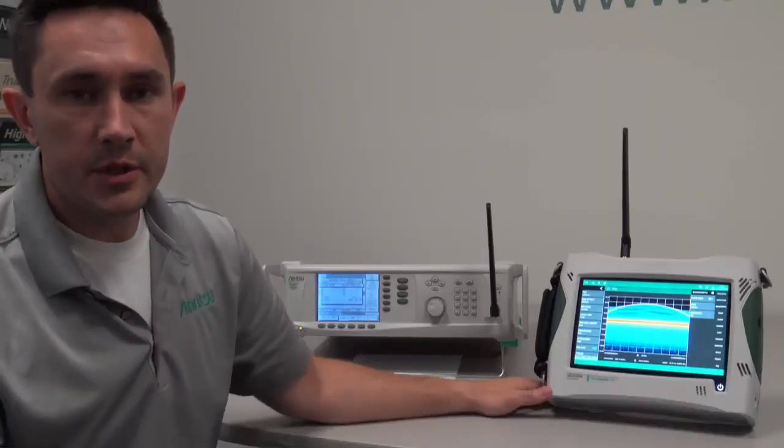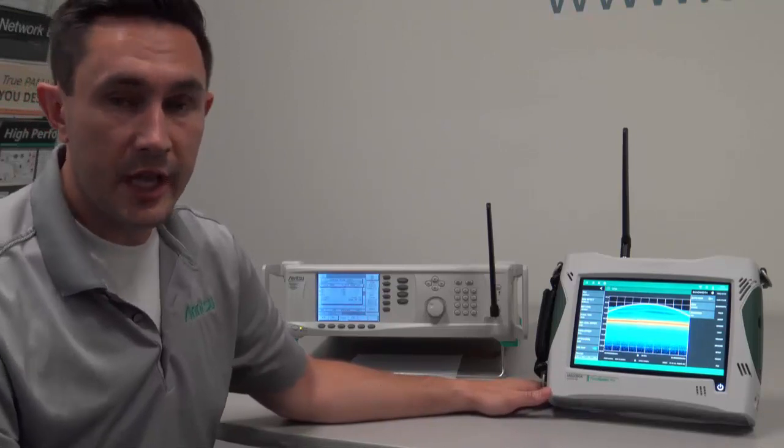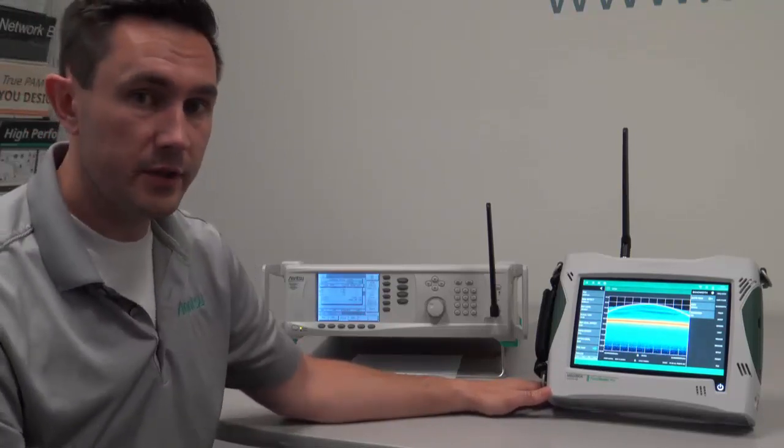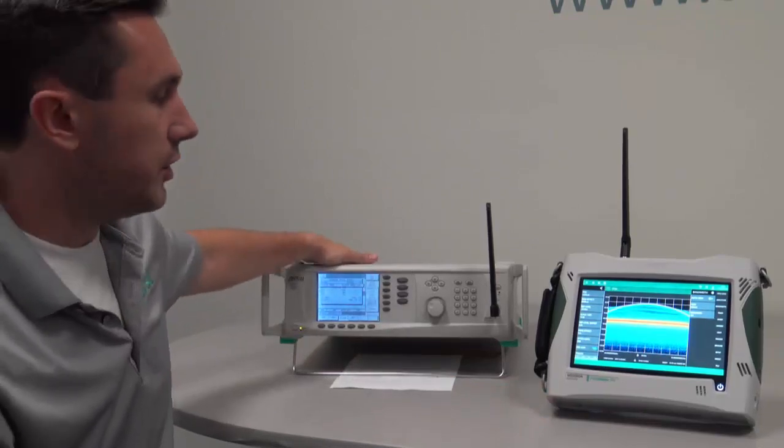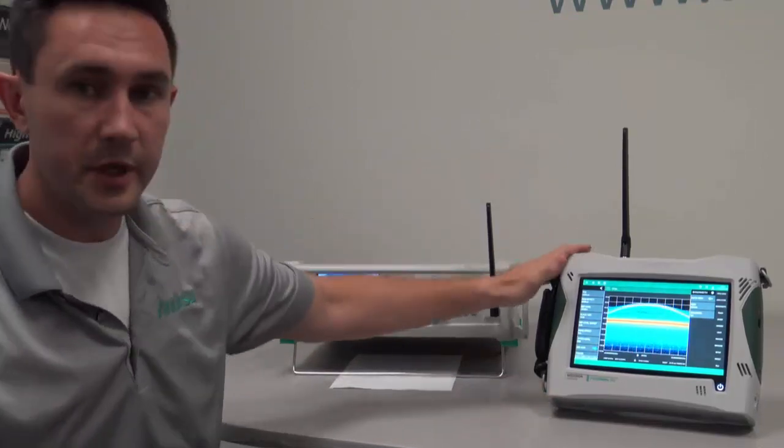The last thing I want to demonstrate is the real-time spectrum analyzer's capability to capture intermittent signals, especially in the field. So what I have set up here is a signal generator that's generating an interferer at 24 GHz over the air to my spectrum analyzer.